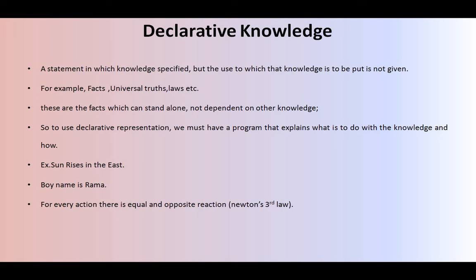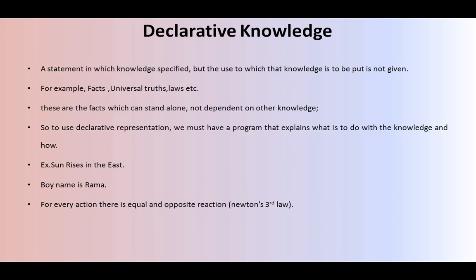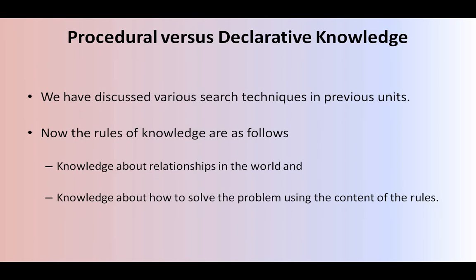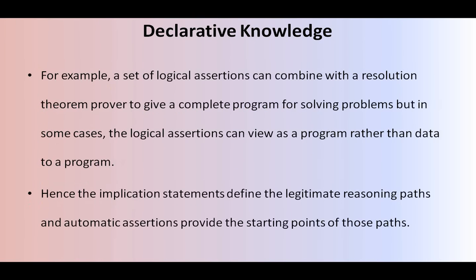The best examples for declarative knowledge are: the sun rises in the east, the boy's name is Rama, and for every action there is an equal and opposite reaction — that is Newton's third law. All these are very good examples of declarative knowledge and standalone statements. Whereas in procedural knowledge you can draw some conclusions, use some implementations, use some substitutions. This is how declarative knowledge and procedural knowledge can be differentiated.